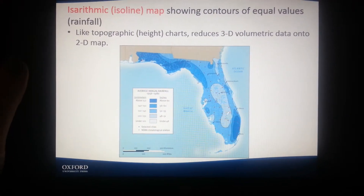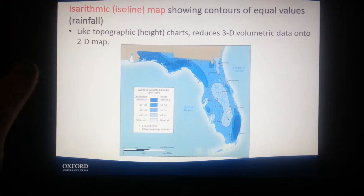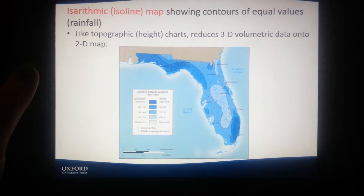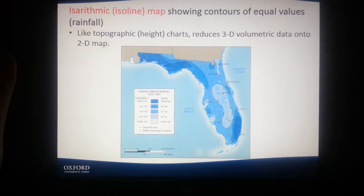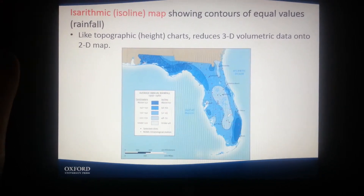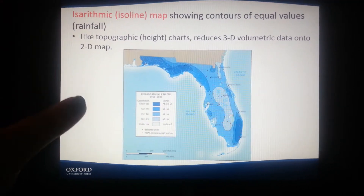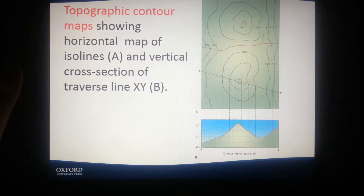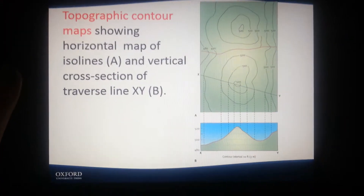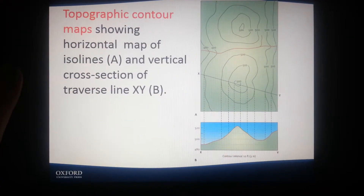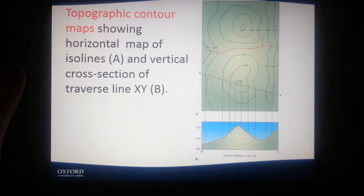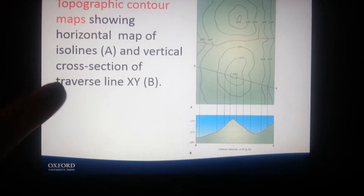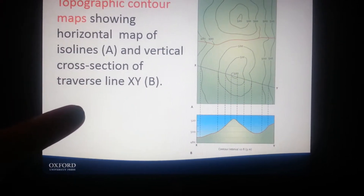An isoline map shows contours of equal values, like rainfall, and like topographic height charts, reduces 3D volumetric data onto a 2D map. Topographic contour maps show a horizontal map of isolines and a vertical cross-section of traverse line XY.